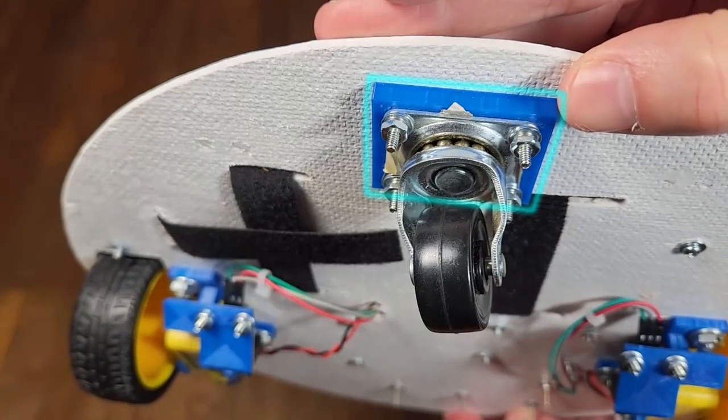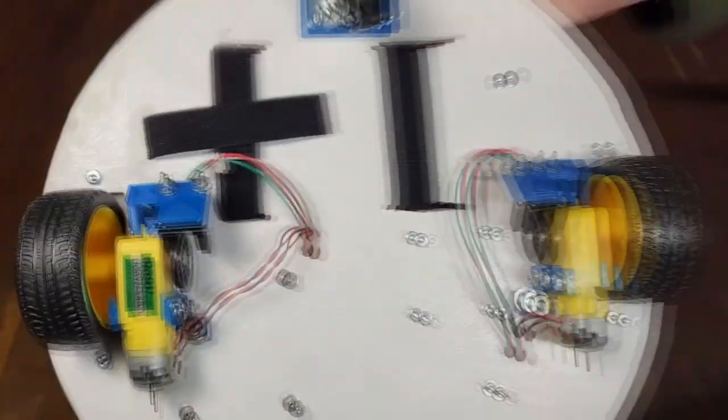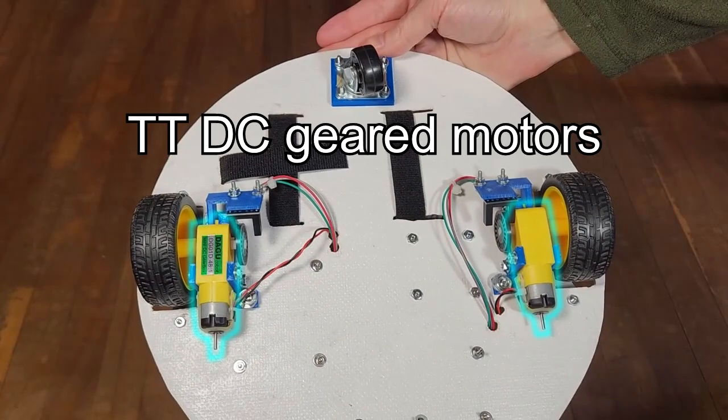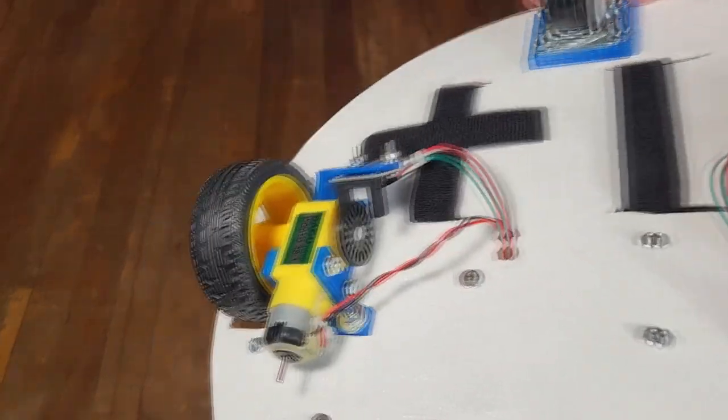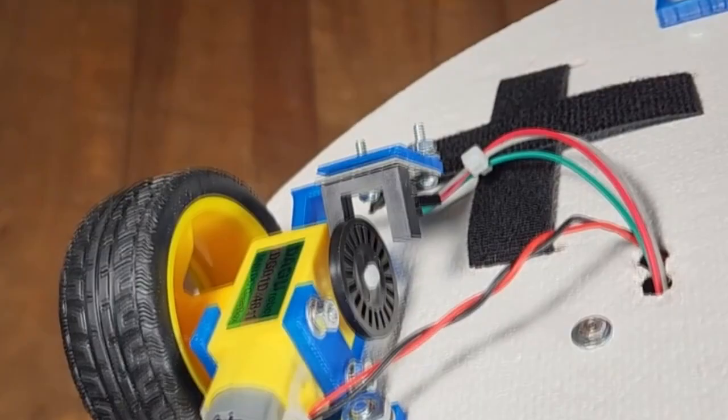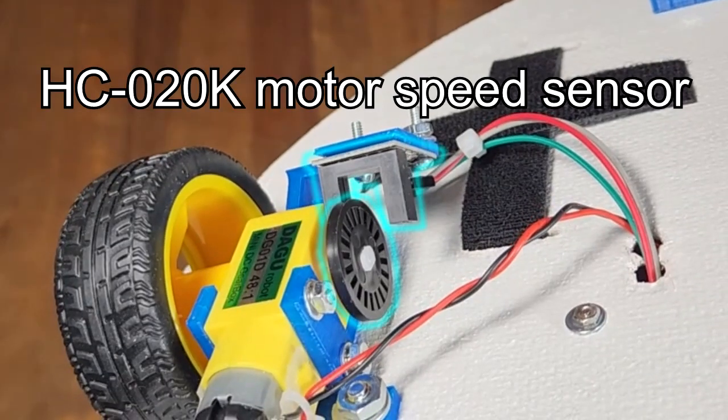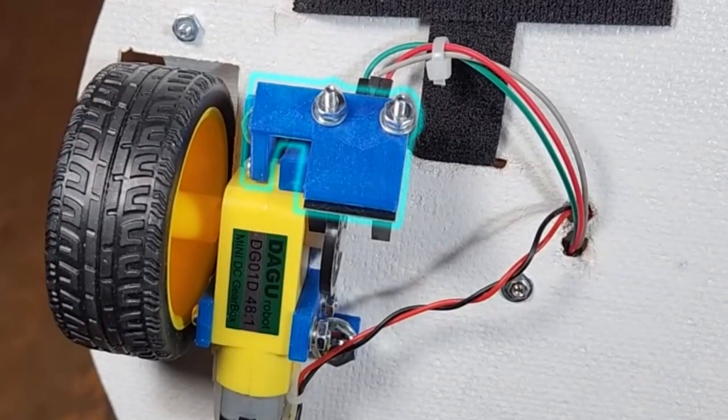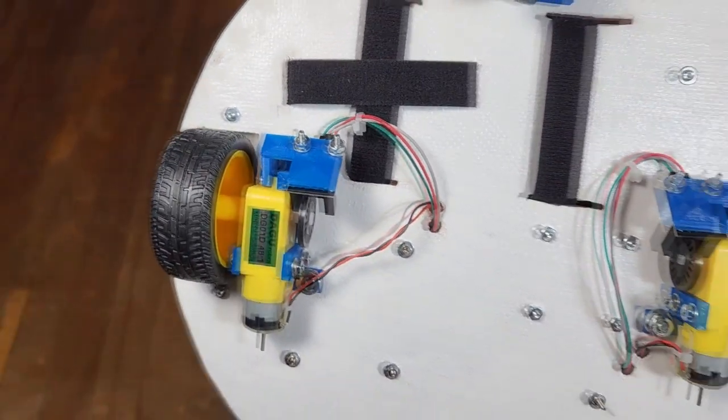It's mounted on a 3D printed spacer to make it the right height. The other two are each driven by cheap TT geared motors. Each TT motor is mounted using another 3D printed part that I designed. Optionally, I have this motor encoder board, an encoder disc that's used for measuring the speed of each wheel. That's mounted using yet another 3D printed part that I designed. And of course, there are the big wheels.